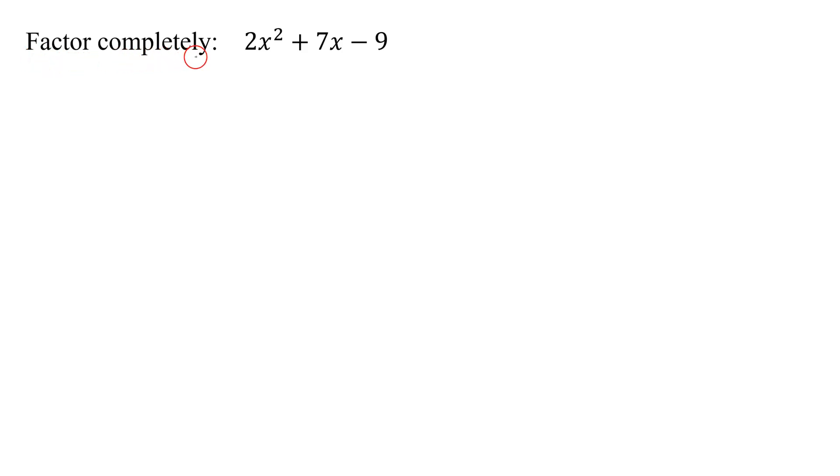In this example, we need to factor completely 2x squared plus 7x minus 9. What's the first thing we do in every single factoring problem? Look for a greatest common factor.